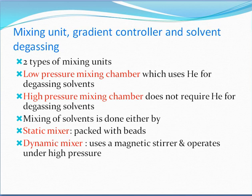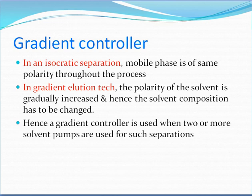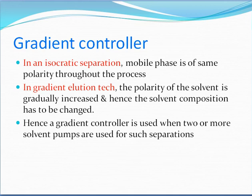The dynamic mixer uses a magnetic stirrer and operates under high pressure. The gradient controller manages solvent composition during separation. In isocratic separation, the mobile phase polarity remains constant throughout the process. In gradient elution, the polarity of the solvent is gradually increased, so the solvent composition must be changed, and a gradient controller is used when two or more solvent pumps are used.